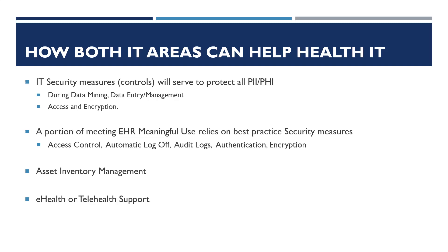Security measures were heavily referenced during our readings about meaningful use. In fact, in order to meet certain criteria or requirements of meaningful use, some best-practice security measures need to be in place at healthcare settings attempting to leverage electronic health records. Some are, as previously mentioned, encryption, access controls, providing things such as automatic log-off features after certain periods of inactivity, audit logs of actions performed on apps or on a physical machine, and authentication methods which include passwords and two-factor authentication.